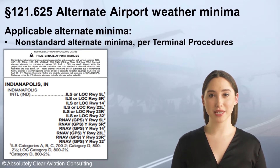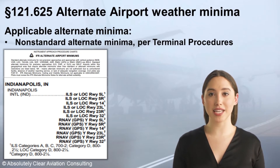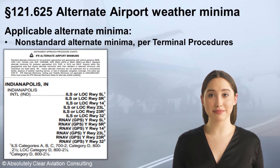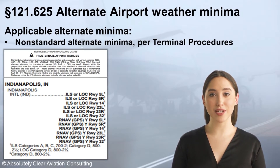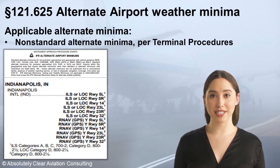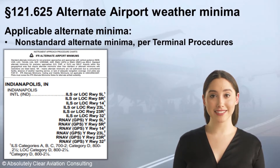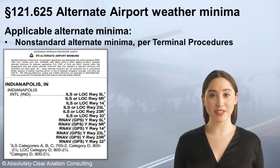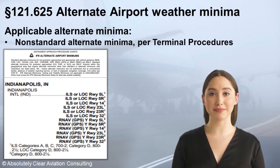Note that the only approach category for which non-standard weather minimums apply to RNAV approaches is Delta. An approach designated as NAA means that alternate minimums are not authorized due to an unmonitored navigation facility, absence of a weather reporting service, or lack of navigation coverage, so such an approach may not be considered in alternate planning.